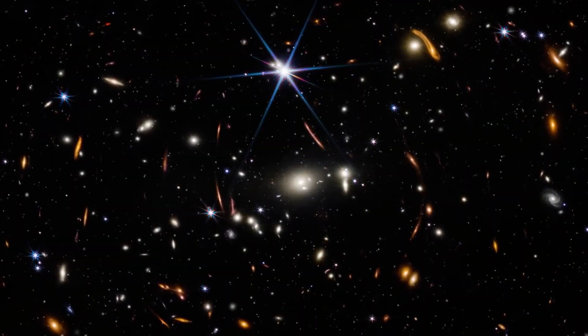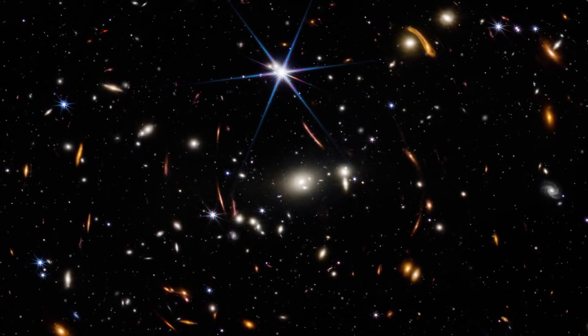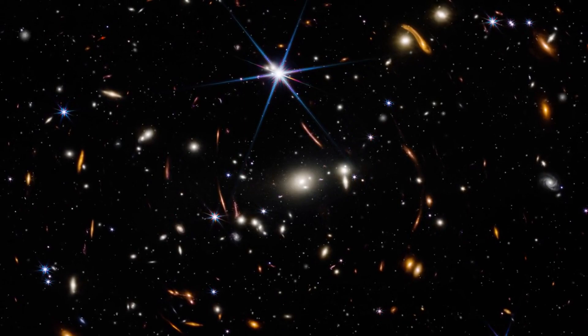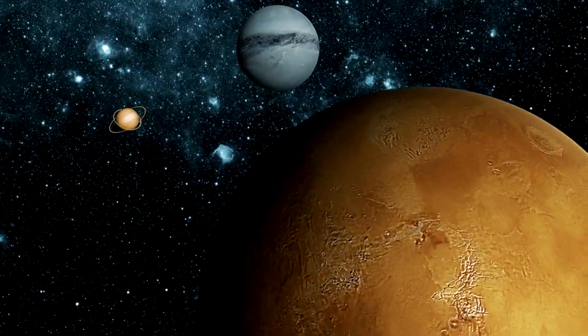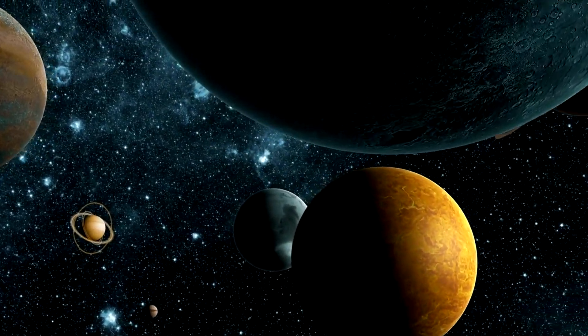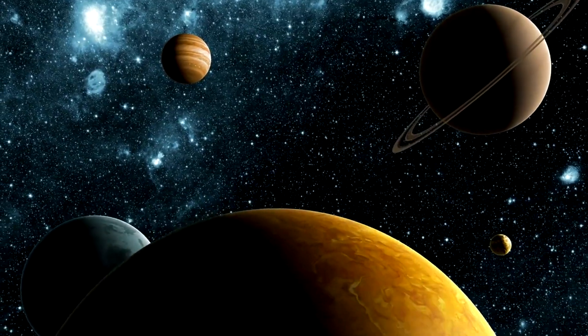The James Webb Space Telescope has uncovered six massive ancient galaxies that are rewriting the textbooks. These bright red spots are not just ordinary galaxies. They're among the earliest and largest ever discovered, dating back up to 13.3 billion years. They formed just a few hundred million years after the Big Bang, much earlier than scientists previously thought possible.